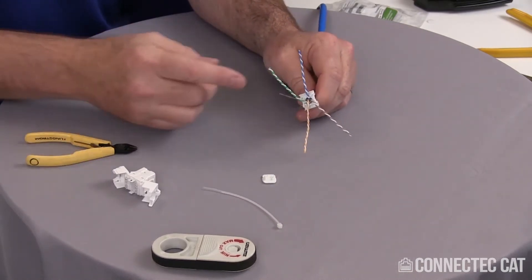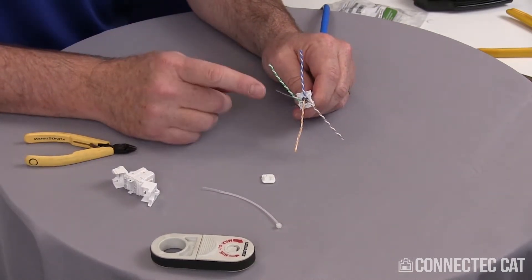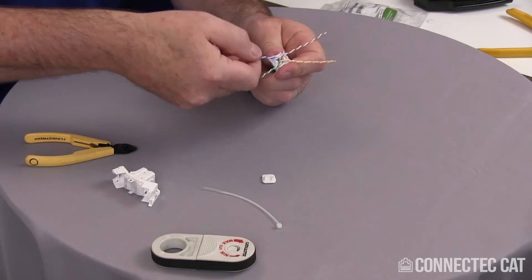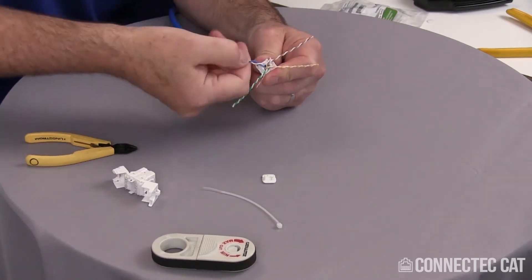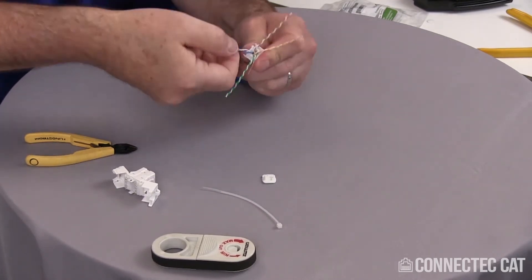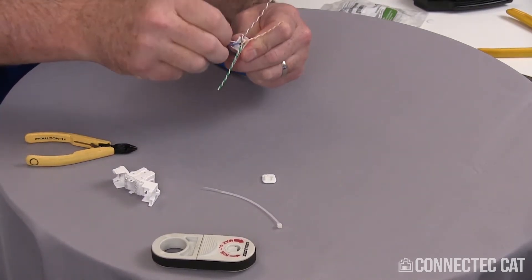Now I'm going to untwist just a portion of the conductors, because you don't have to untwist the whole thing. I'm going to grab it firmly, spin it a couple times to get that starting to untwist, and then line my color codes up in the slots.